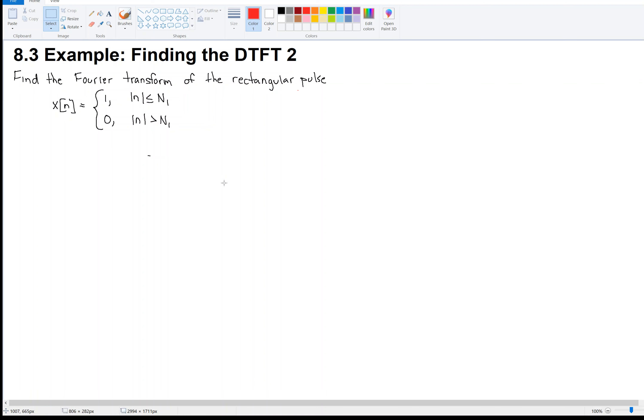Hi, welcome back. We are working on finding the discrete time Fourier transform, and I have an example here. Find the Fourier transform of this rectangular pulse given by this thing, where n1 is a parameter of the pulse.